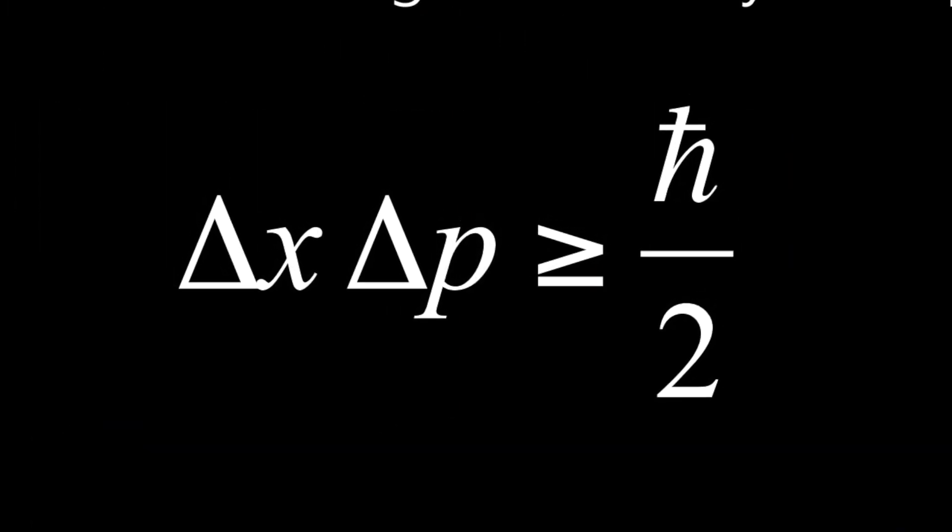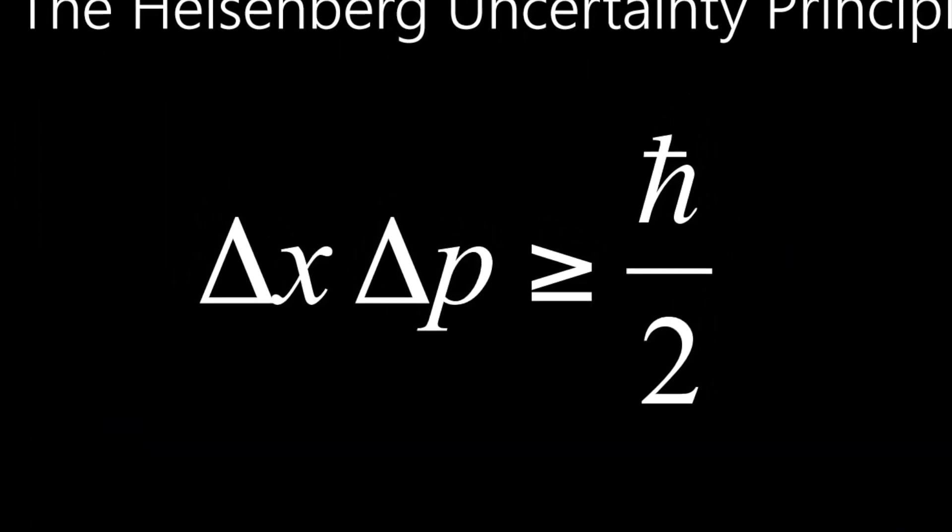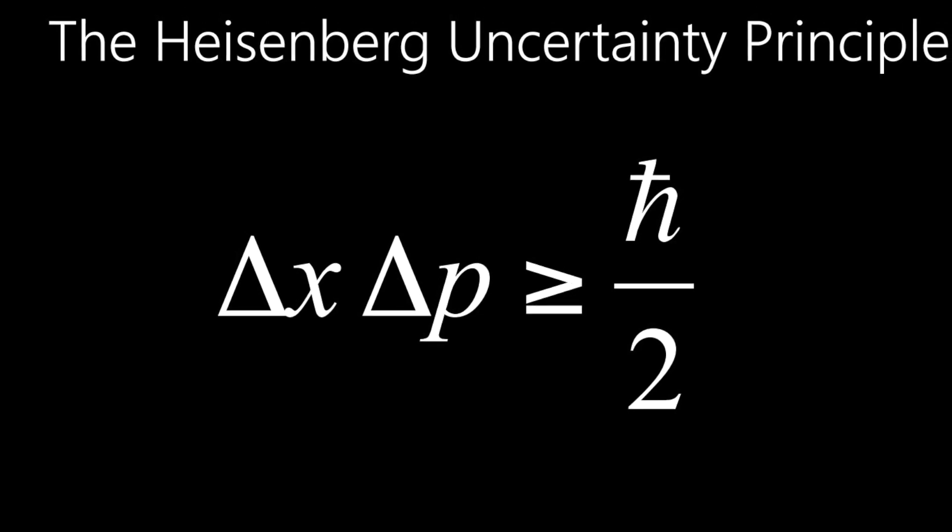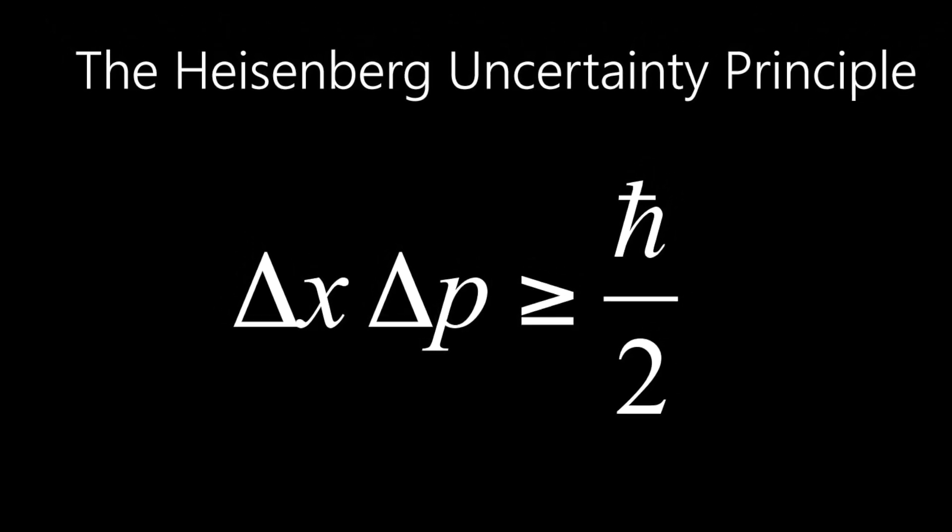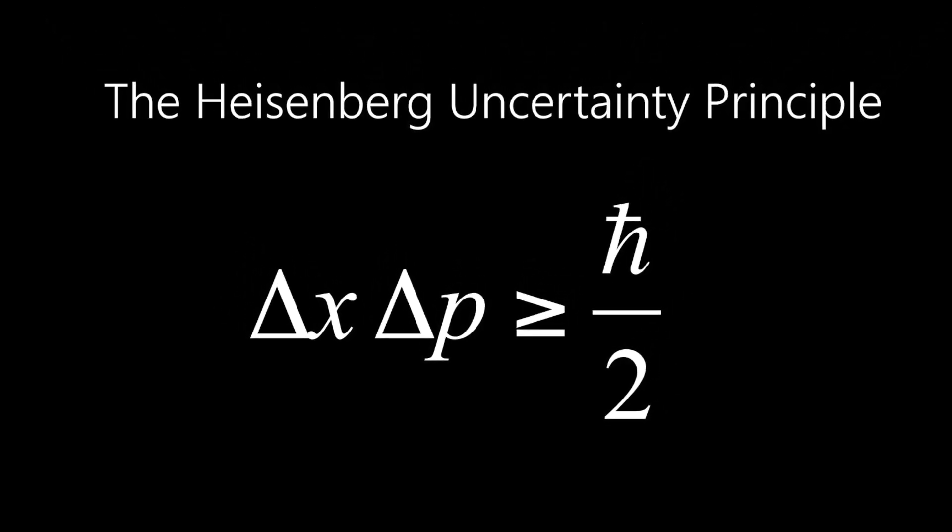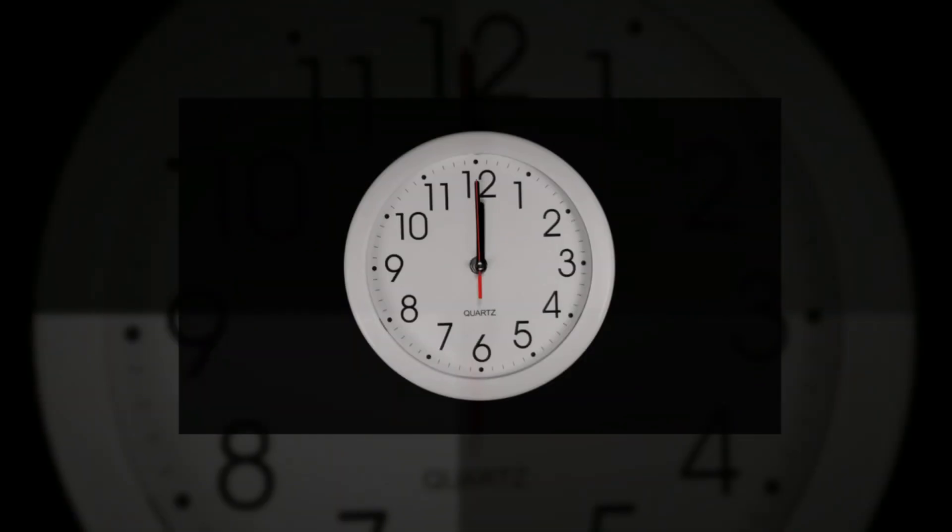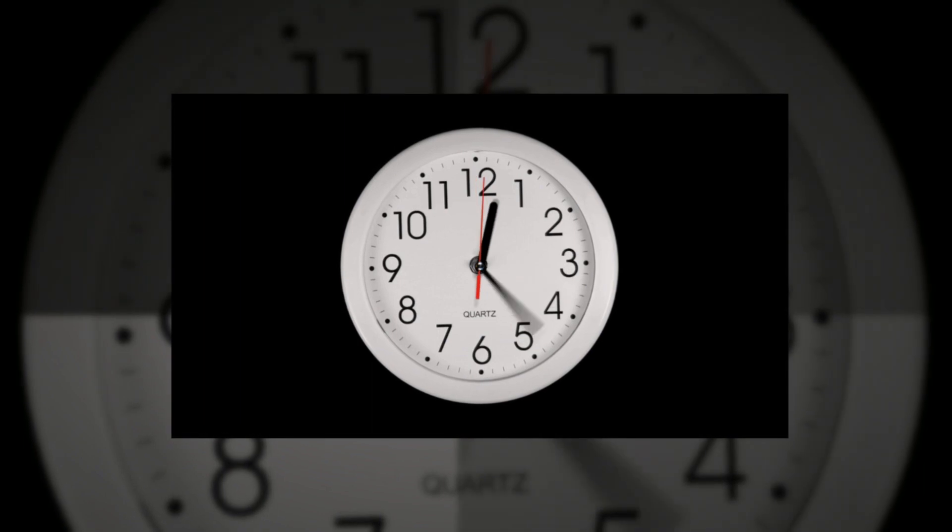The result relies on an additional quantum weirdness, the uncertainty principle, which says it is impossible to extract an unlimited amount of information from a quantum system. That means there is a limit to the precision of any measurement, including a measurement of time.